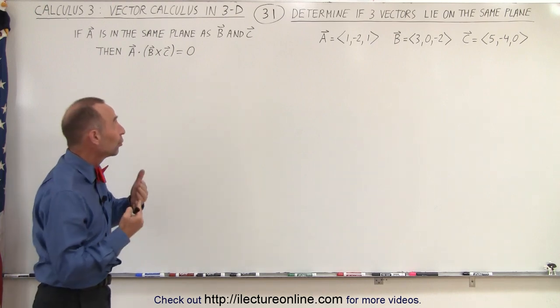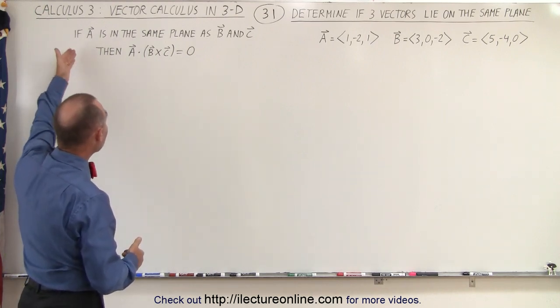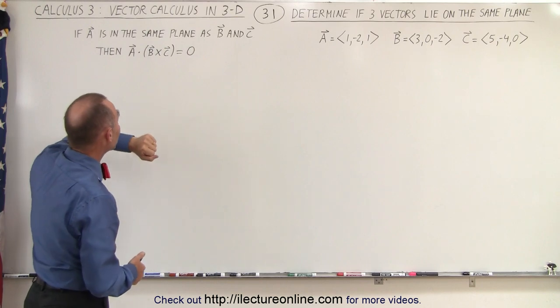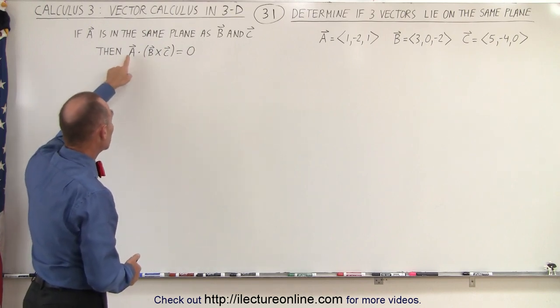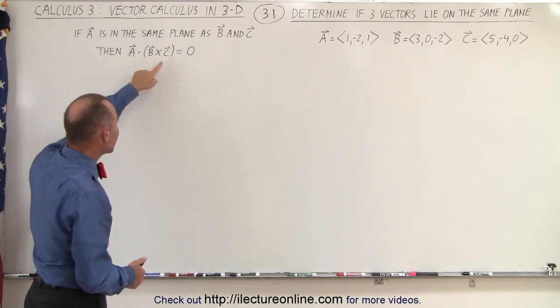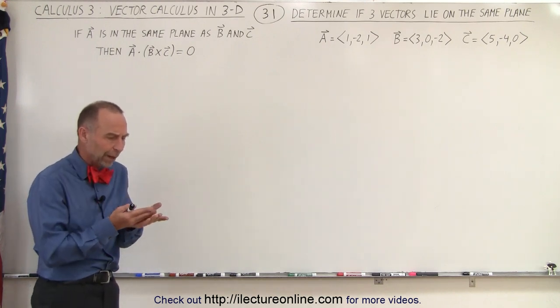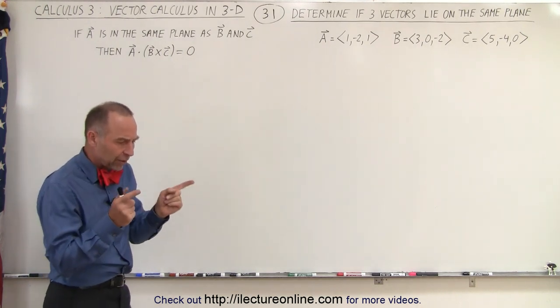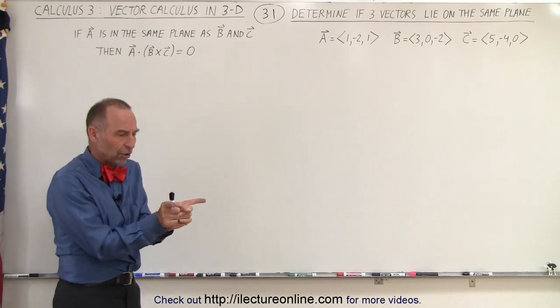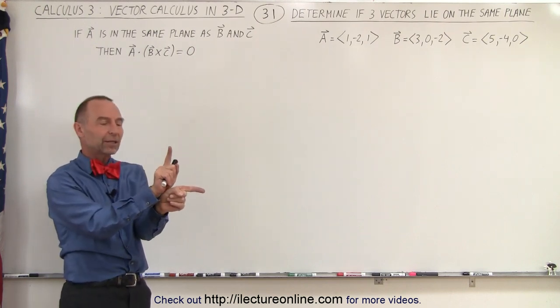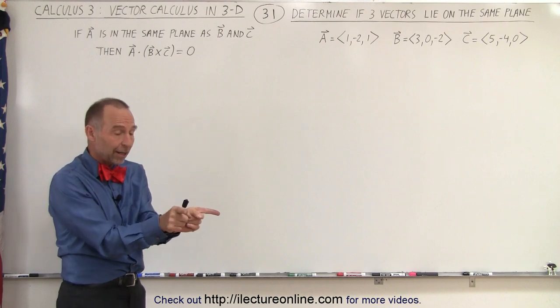Well, the way we can figure that out is to realize that if A is in the same plane as B and C, then the dot product between A and the cross product of B and C must equal zero. Because the way you think about it, if you take a cross product between two vectors, you get a third vector that's perpendicular to the plane in which the first two vectors lie.